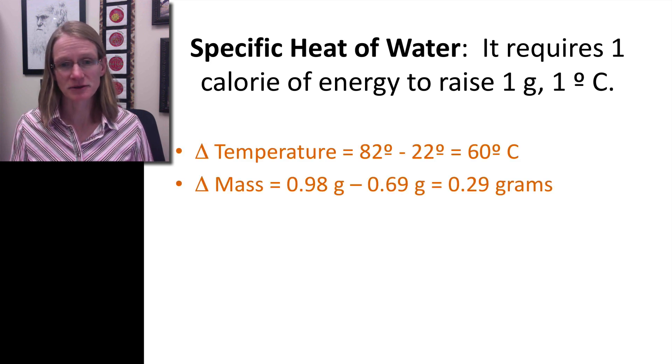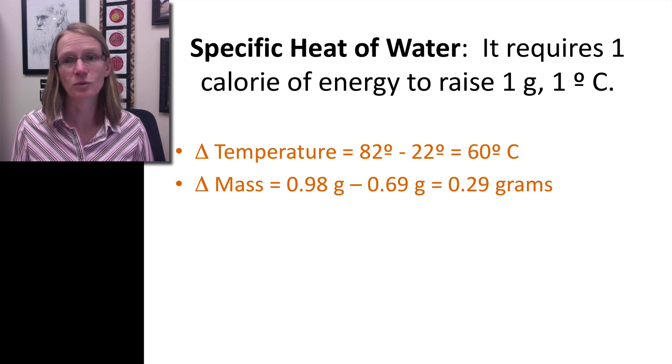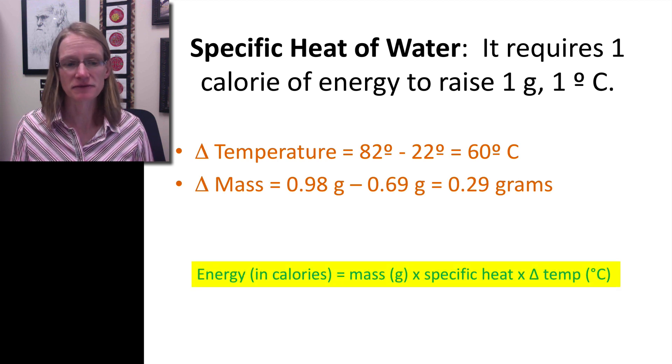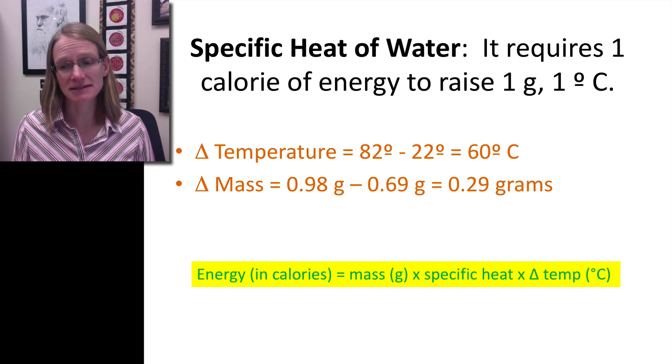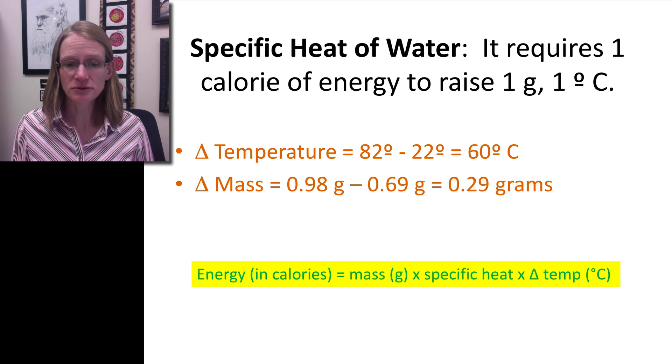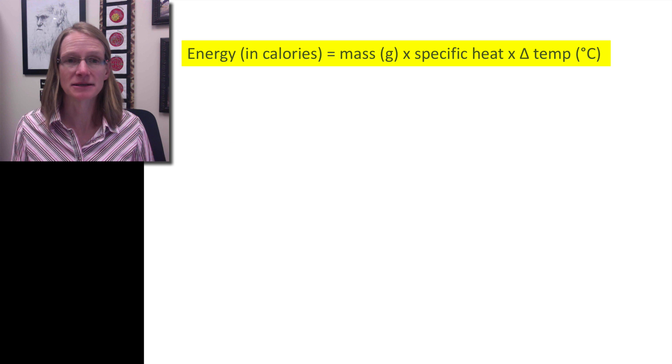We can then remember these are the stats that we figured out before. The change in temperature for our experiment was 60 degrees C, and the change in mass was 0.29 grams. And so we could then be able to use an equation to figure out how much energy was in that walnut, knowing all of this information. And the equation says that the amount of energy is equal to the mass times the specific heat times the change in temperature. It's important to remember that all the pieces on the right hand side refer to the water that we actually were using to be able to measure how much energy was actually in that particular food item.